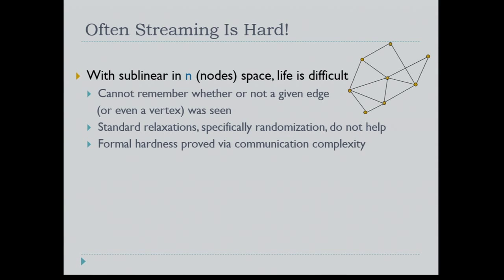So far everything sounds good, but the bad news is that streaming is often hard. If you want to go sublinear in N, the number of nodes, life is very difficult — we cannot even track whether we have seen a given edge or vertex before. Techniques like randomization don't help: via communication complexity, with no conditions like P ≠ NP, we can prove that for many problems you cannot go below N in space even with randomization.